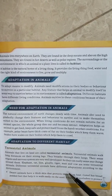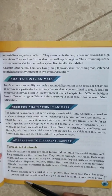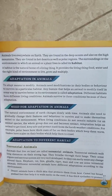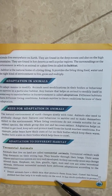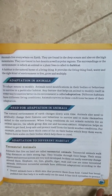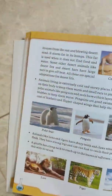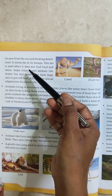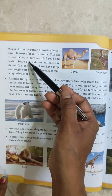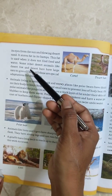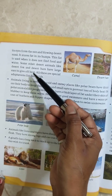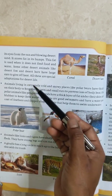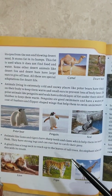Different terrestrial animals have different adaptations according to their environment. Desert animals have thick skin that protects them from heat. Camels have broad padded feet that help them walk easily on sand, thick eyelashes to protect their eyes from sun and blowing desert sand, and they store fat in their humps, which is used when they don't find food and water. Some desert animals like Desert Fox and Desert Hare have large ears to give off heat.